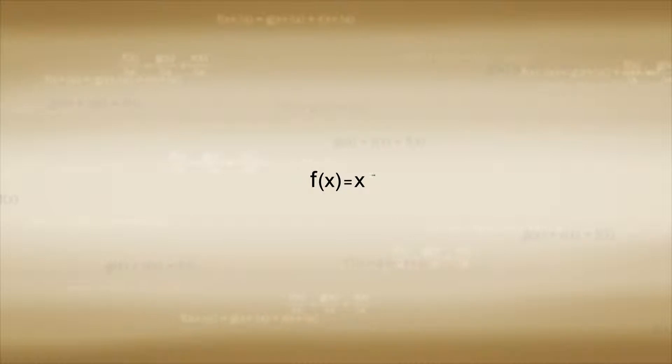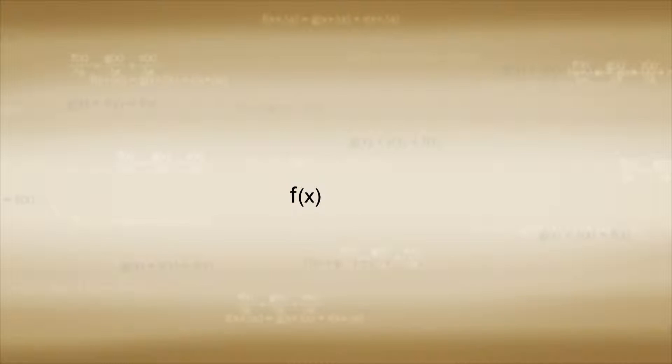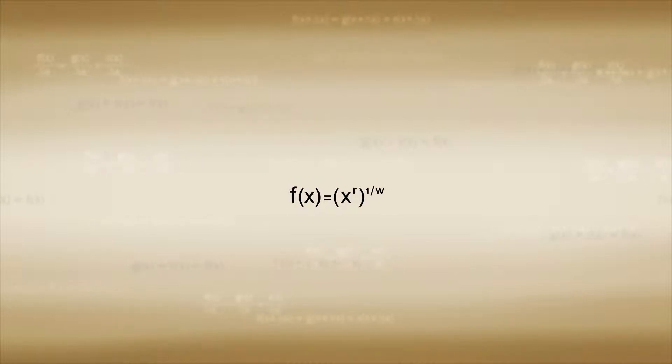It is also possible for n to be a fraction of some sort, such as r over w. In this case, we will write f of x is equal to x raised to r over w. It would be pretty difficult to imagine a fractionally dimensional object, but we don't have to. The function f of x can be represented as x raised to the power of r, which is then raised to the power of 1 over w.